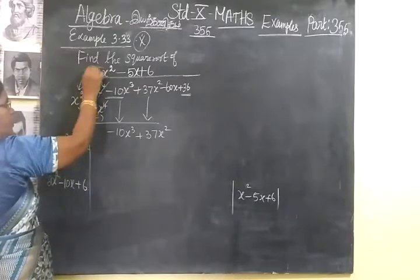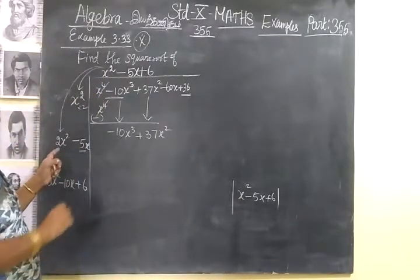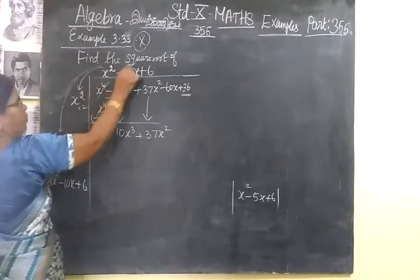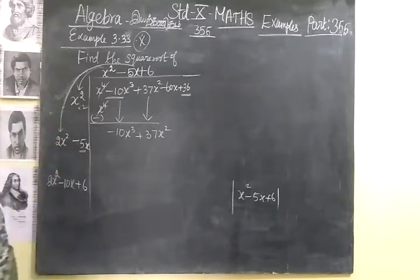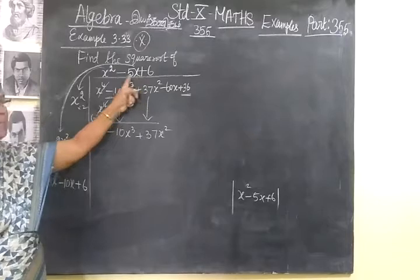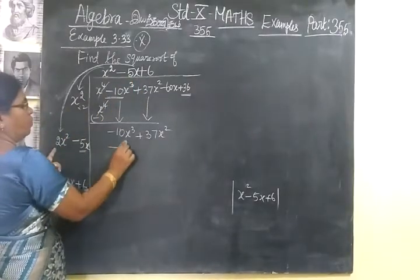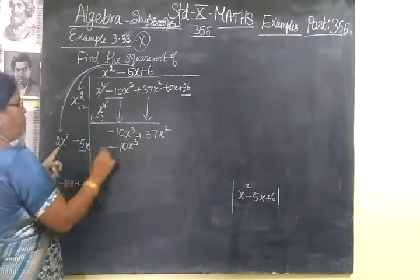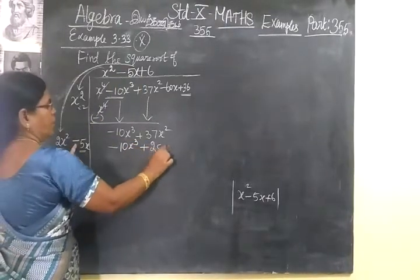Take -10x³ + 10x³ and 37x² down. Now multiply by this: multiply by the next number, -5x³. First term multiply. By the next term you are multiplying, so first number is 5 × 2 = -10x³. Minus into minus is plus, giving +25x².